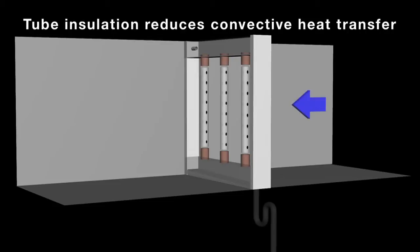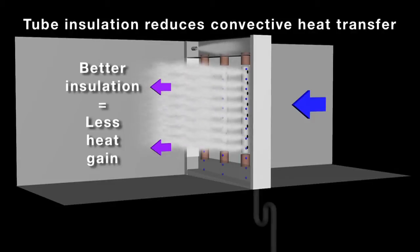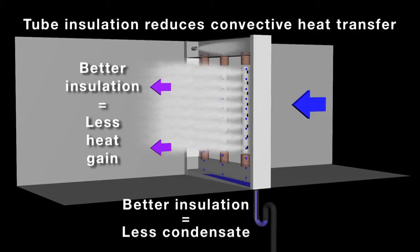Dispersion tube insulation reduces convective heat transfer, thereby reducing condensate production and downstream air heat gain. The better the insulation, the less condensate produced and heat transferred. Note that dispersion tube insulation only reduces convective heat transfer. It does not reduce downstream heat gain caused by the sensible heat of steam dispersed into the air stream.